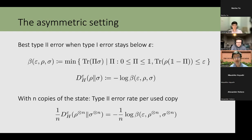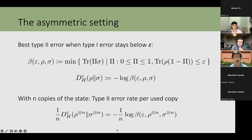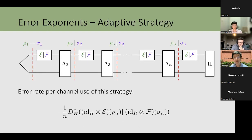We look at the asymmetric setting: minimize the type 2 error under the constraint that the type 1 error stays below some threshold ε. The negative log of this type 2 error is called the hypothesis testing relative entropy. It satisfies data processing. In the i.i.d. setting with many copies, one looks at the decay rate of this error with the number of copies, which is one over n times this negative log — so it makes sense to look at this quantity.